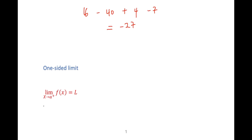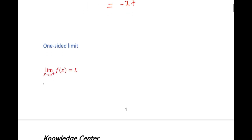For one-sided limits, as the name implies, we will only be looking at one side of the point given in the question. Below is the definition: the limit of f of x as x approaches a-plus equals L. In my previous video I talked a little bit about this — a one-sided limit is a limit where we approach from only one direction, either from the right or from the left.